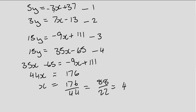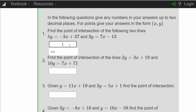Substituting x equals 4 into the first equation: 3 times 4 is 12, so 35 minus 12 is 25, and 25 divided by 5 gives y equals 5. As a sanity check in the second equation: 4 sevens are 28, 28 minus 13 is 15, and 15 divided by 3 is 5. So x equals 4 and y equals 5. Correct.